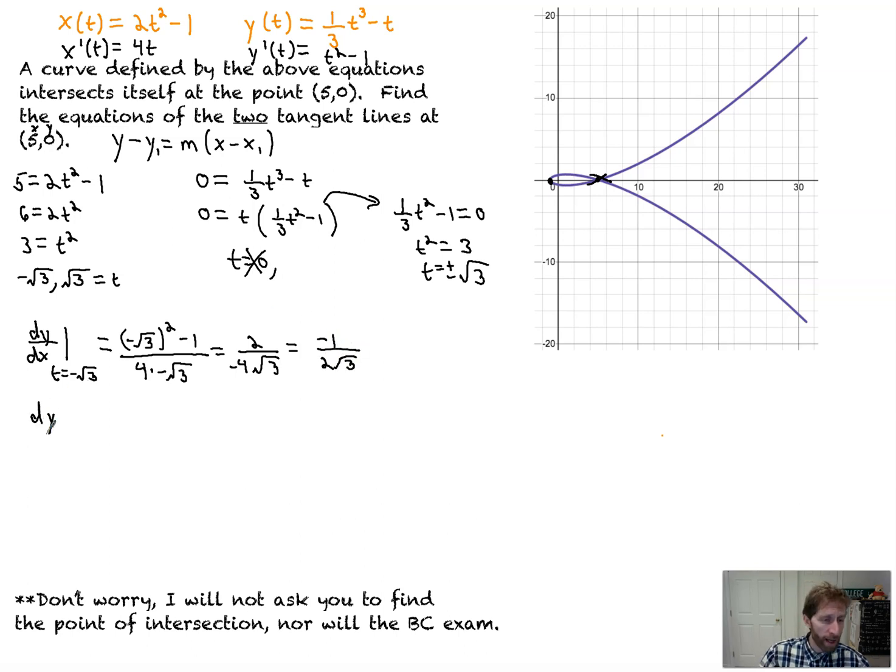if you find dy/dx at t equals root 3, that's the slope of this line. So here's, right there's the negative slope coming around this way, and then we go whoop, there's the positive slope as we exit out of the loop.